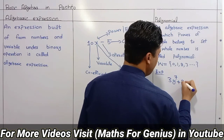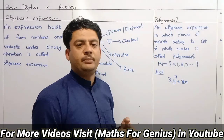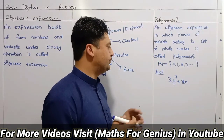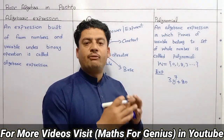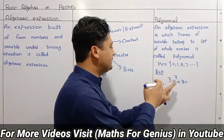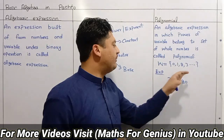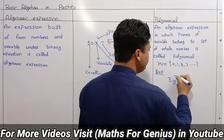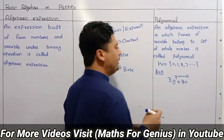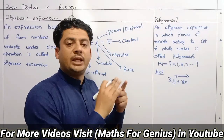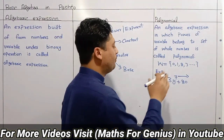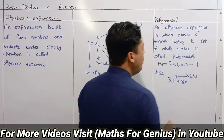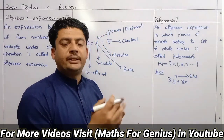There is a polynomial and there is something that is not a polynomial. Here we can see 7 for the whole number exponent — the algebraic expression is a polynomial.